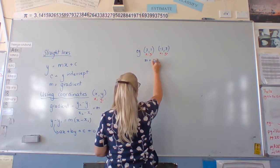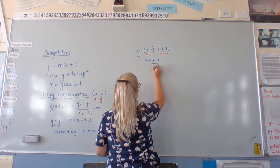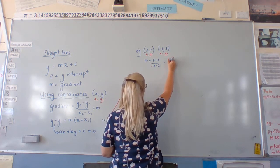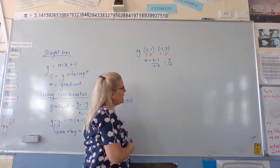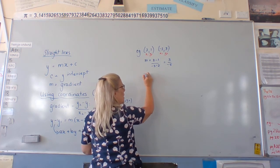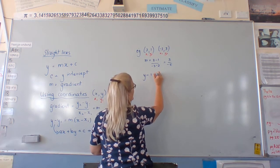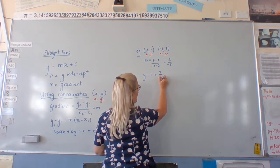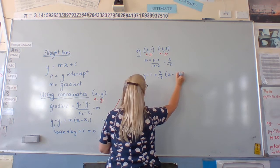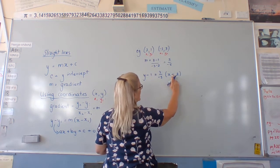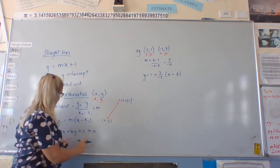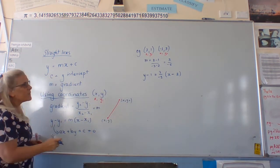We've got 3 minus 1 over negative 3 minus 2. That equals 2 over negative 5. So it's a negative gradient. And y minus 1 equals 2 over negative 5, x minus 2. Negative 1, negative 2, because in the formula, they're both minus signs.